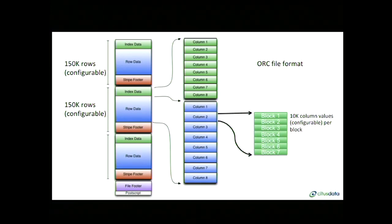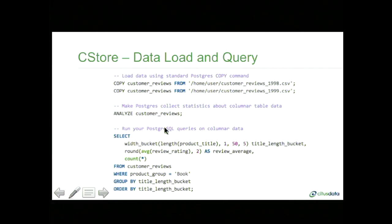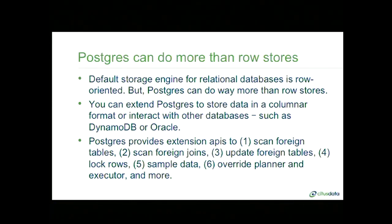You can then run your typical PostgreSQL commands to ingest data. C-Store stores this data on disk using a columnar layout, and you can run analytical queries on this columnar data to get insights. By speaking to the PostgreSQL APIs, you can also leverage existing PostgreSQL features — for example, running ANALYZE before a SELECT so PostgreSQL collects statistics about the underlying data and uses them to optimize queries. In summary, the default storage engine for relational databases has long been row stores, but that doesn't mean it's the only thing PostgreSQL can do.